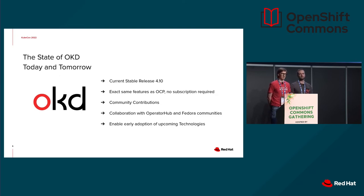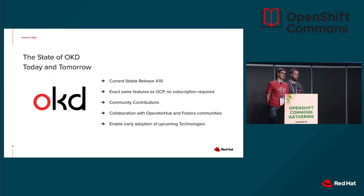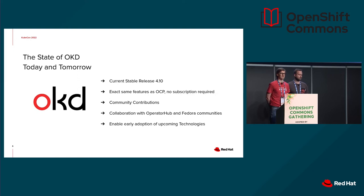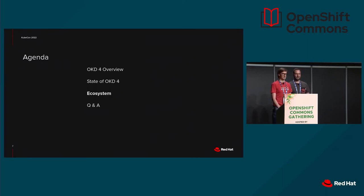OKD also sits between the OperatorHub upstream and the Fedora community. Since we use Fedora CoreOS, we get all the new features coming into Fedora, and you can also make use of all the features from OperatorHub, participating in those communities using OKD as a starting platform. Another goal of OKD is to get new technologies enabled, preferably by default. For instance, OKD was the first distribution to use Ignition version 3, and we are now defaulting to Cgroups v2 enabled by default before OCP does that.